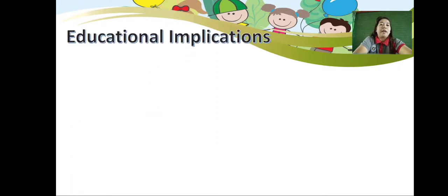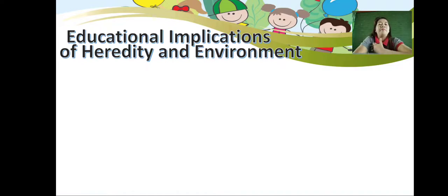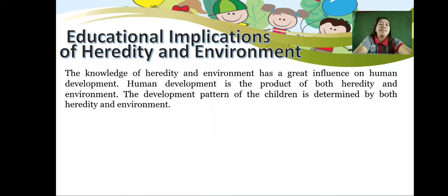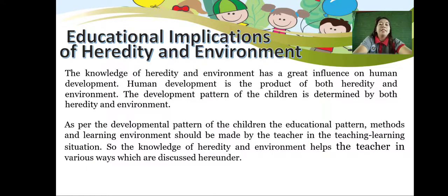So, what is the educational implication of heredity and environment? It is very important that we know the educational implication of heredity and environment. The knowledge of heredity and environment has a great influence on human development. Human development is the product of both heredity and environment. The development pattern of the children is determined by both heredity and environment. As per the developmental pattern of the children, the educational pattern, methods, and learning environment should be made by the teacher in the teaching-learning situation.